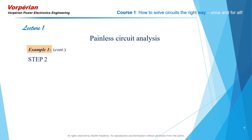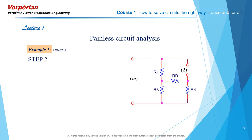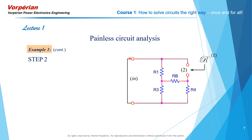Step 2: Determine the resistance looking back into port 2 with the input port short-circuited. We call this script R super 2, and we see that with the short at the input, R1 is in parallel with R3. This terminal here is coincident with this point here. Therefore, script R2 is R4 in parallel with Rb plus R1 parallel R3. And we write that down.